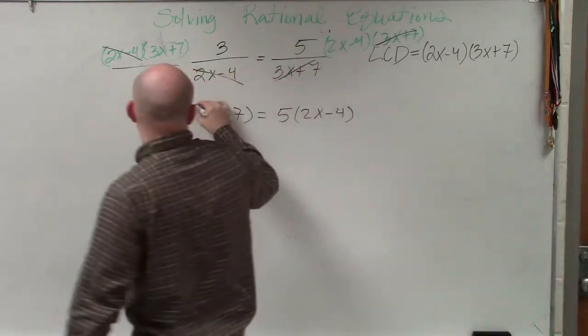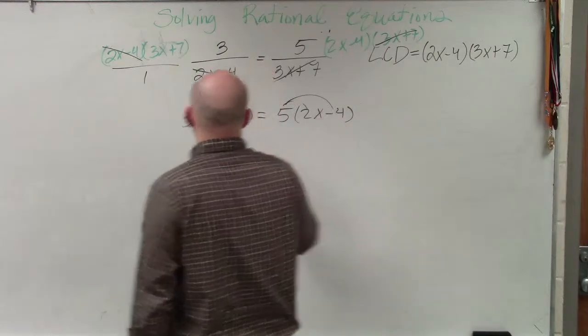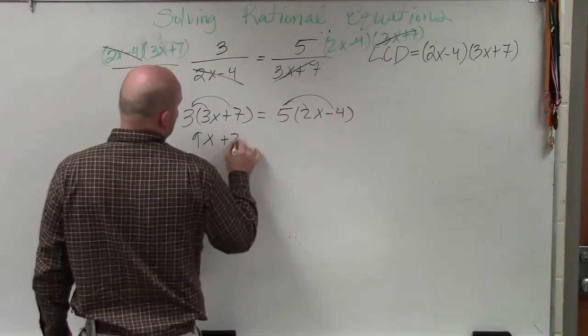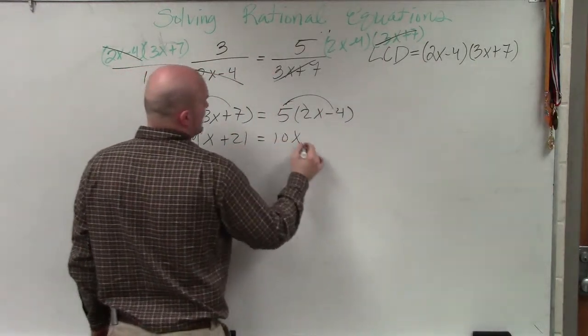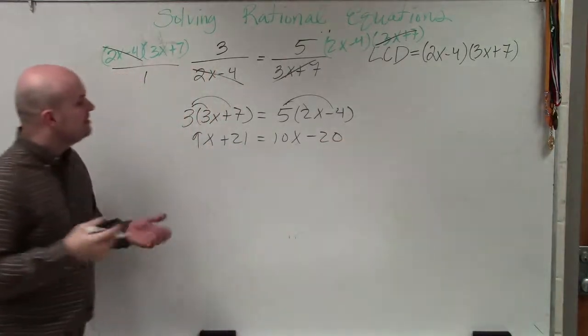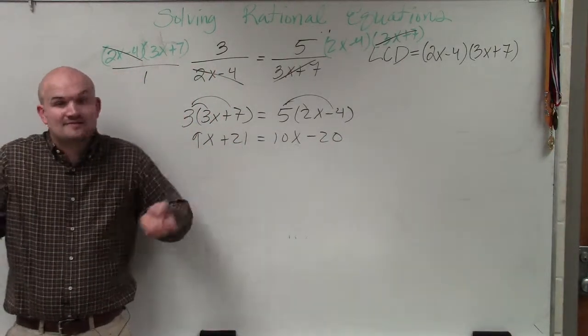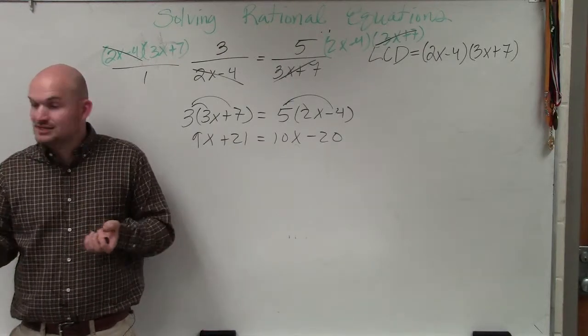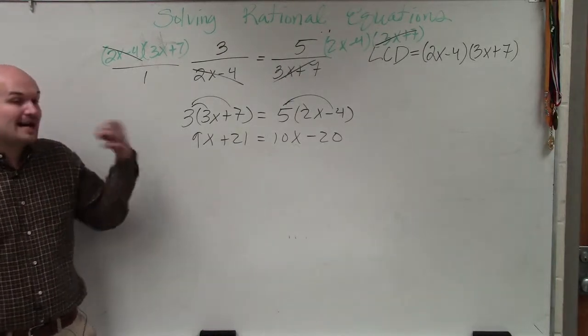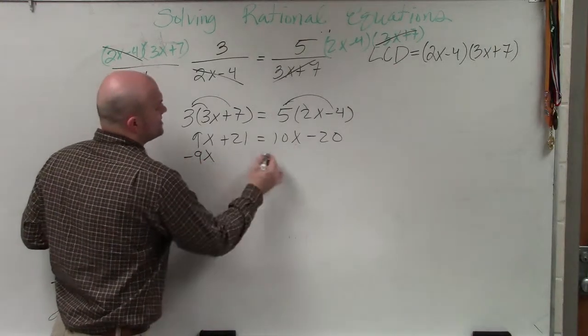We first need to apply distributive property. And therefore, we have 9x plus 21 equals 10x minus 20. Now we need to determine where do we want to get the x's. We have x's on the left side and the right side. So we need to pick a side to put the x's. It doesn't matter which side you want to put them on. I always like to put them on the side, though, that they're going to be positive.